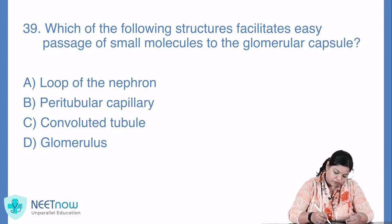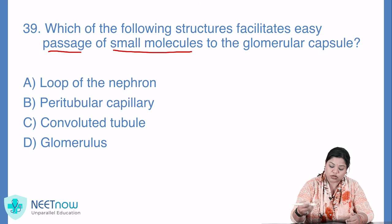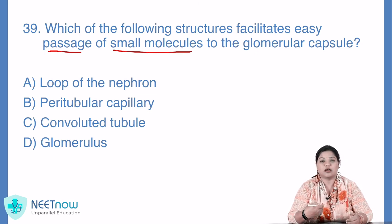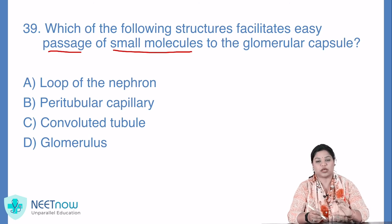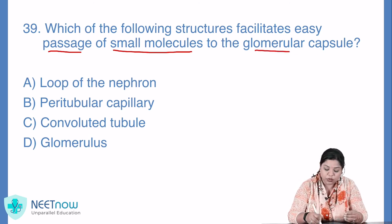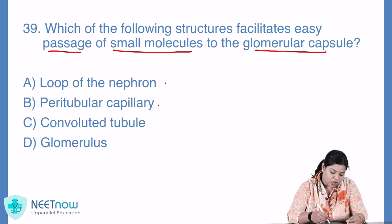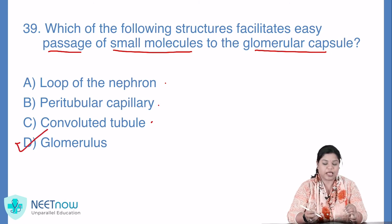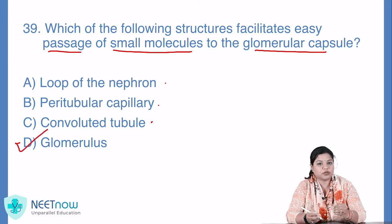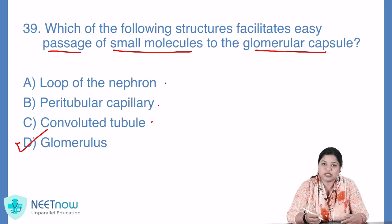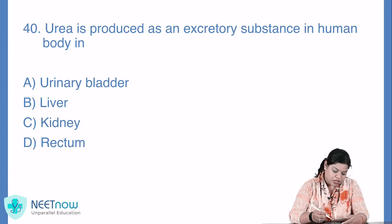Question number 39: which of the following structures facilitates easy passage of small molecules to the glomerular capsule? Yaani ki inmen se kaun sa aisa structure hai jo small molecules ko passing mein help karta hai to glomerular capsule? Options: loop of the nephron, peritubular capillary, convoluted tubule, ya phir glomerulus. Glomerulus hai jiske through small molecules ka passage easy tarike se ho jaata hai. So yahan pe option D aapka sahi hai.